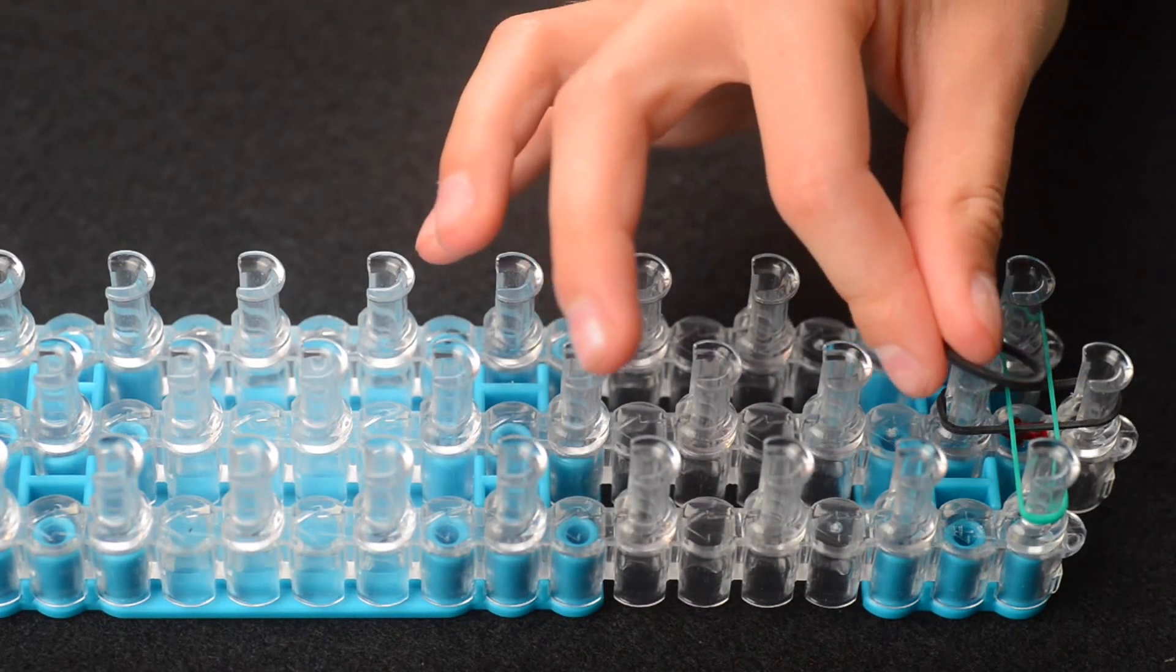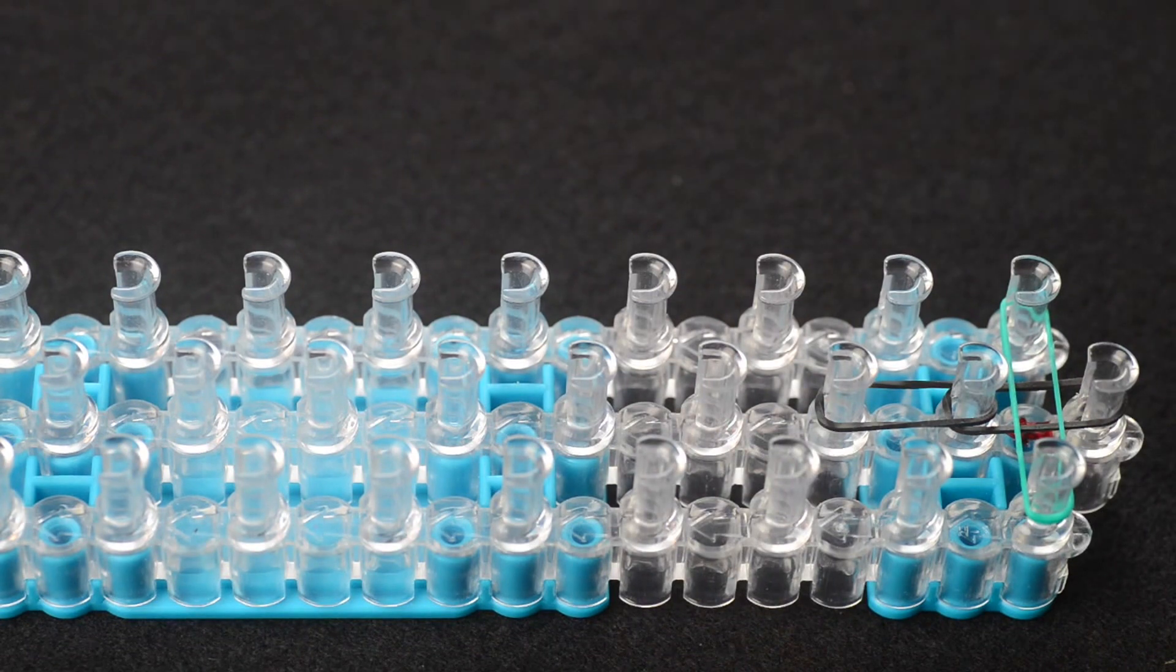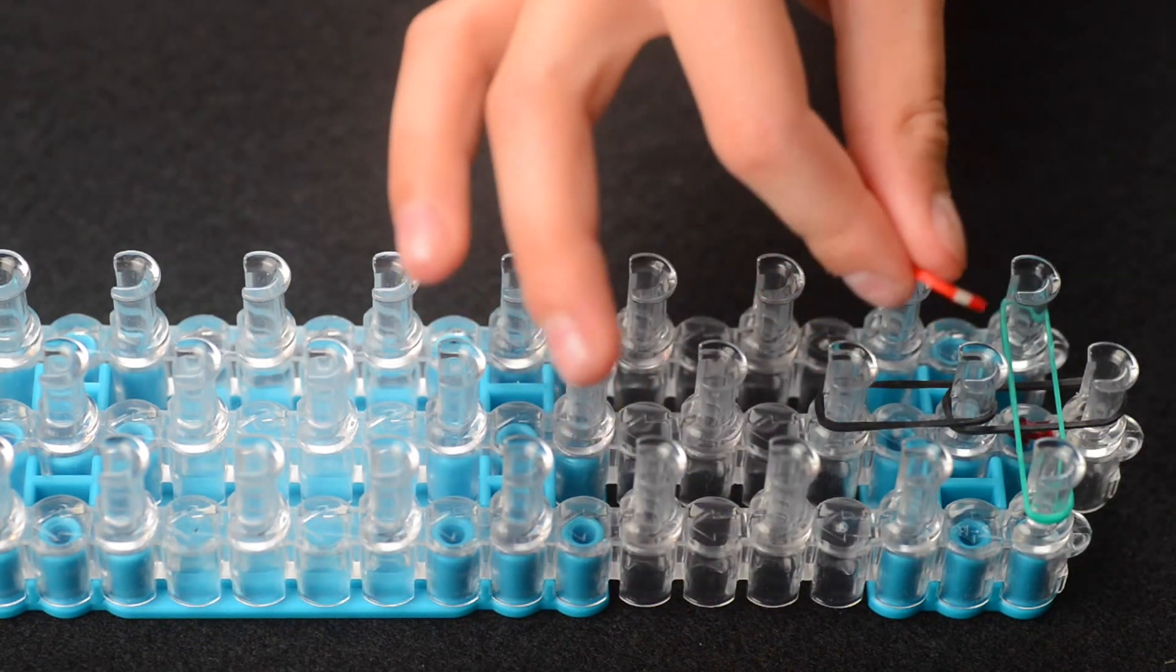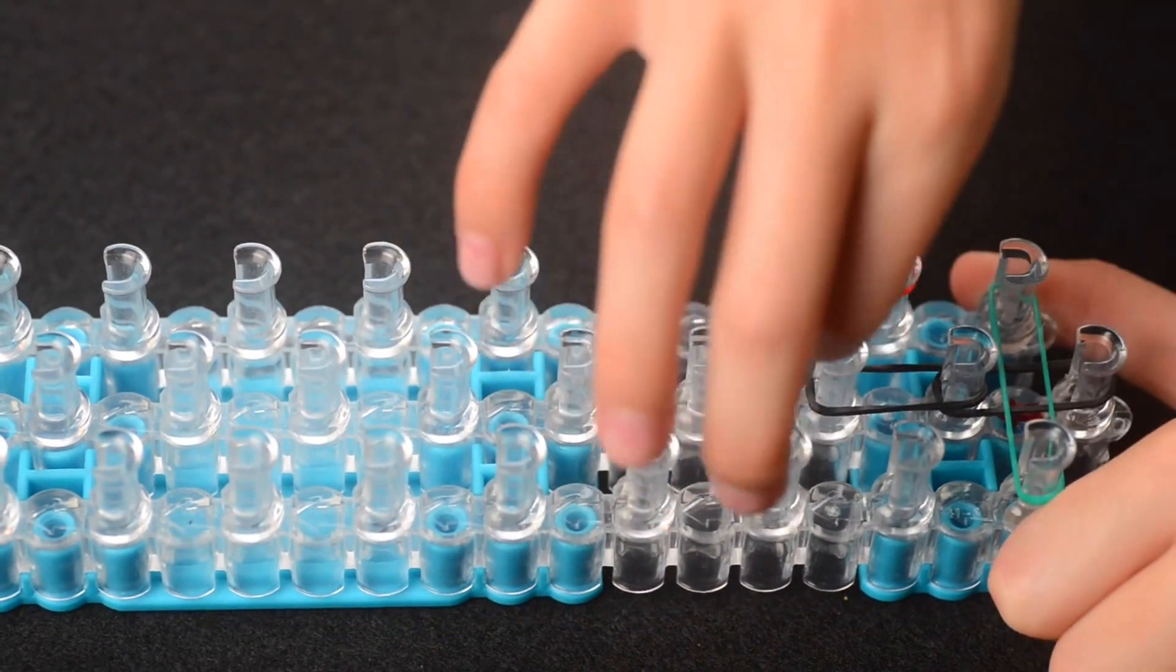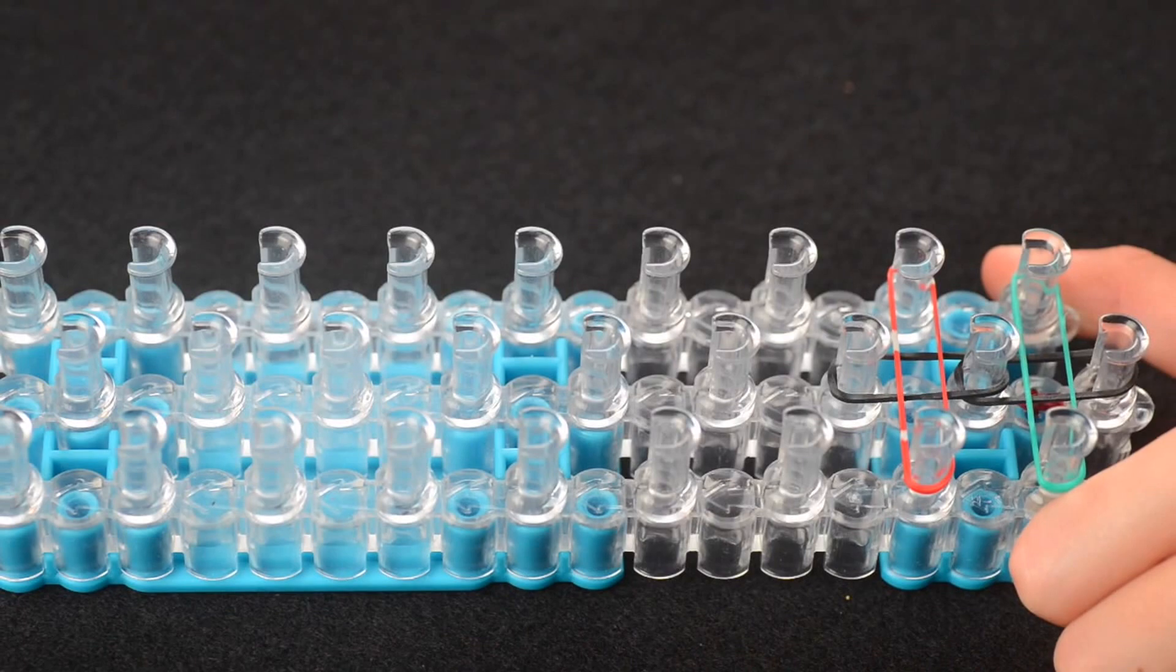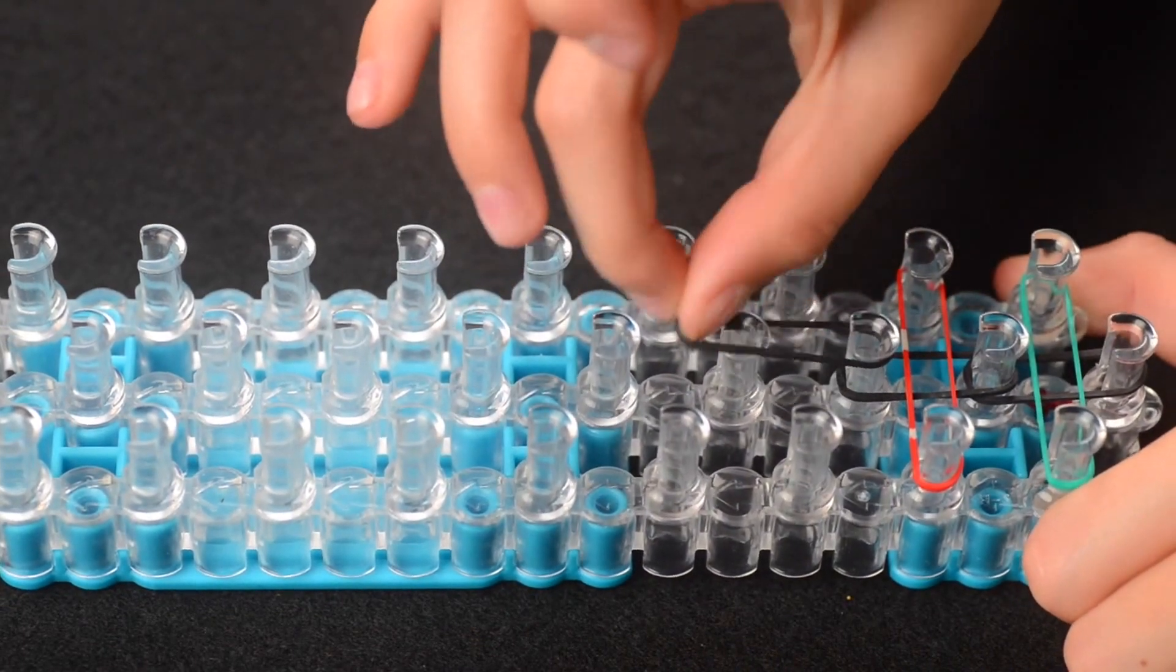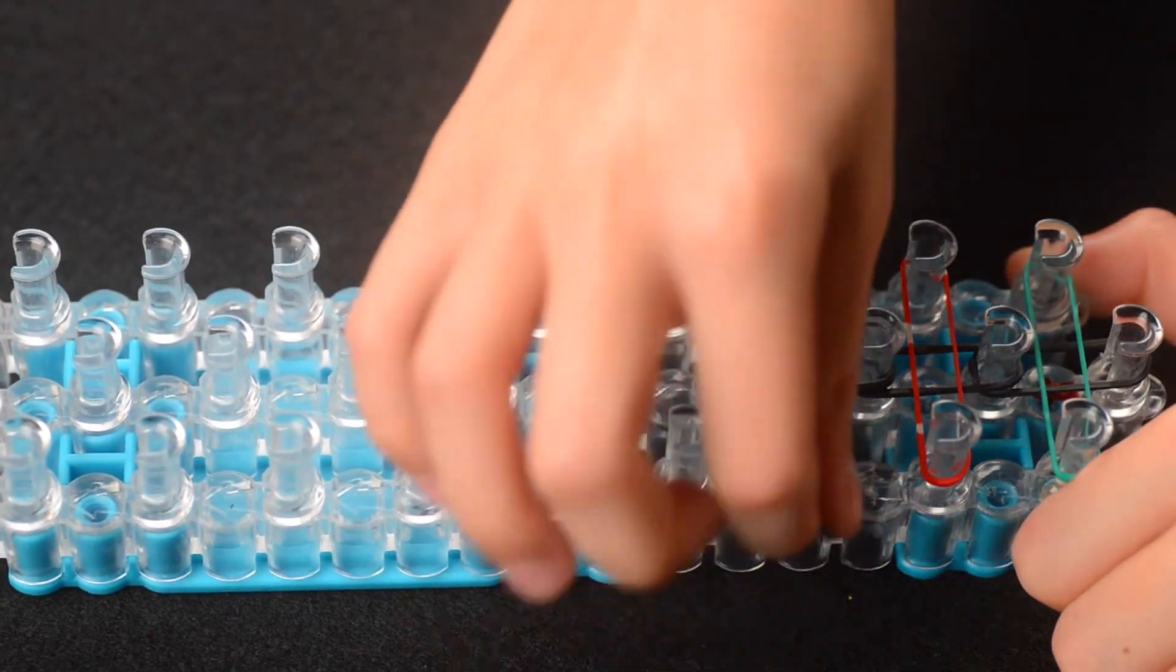Then you're going to take your other black band and go forwards in the middle. And then take another band and go from the first right peg to the first left peg. Now go up here again, and cross.